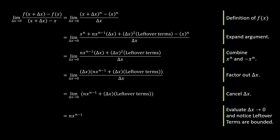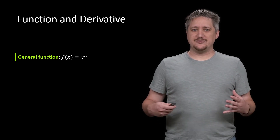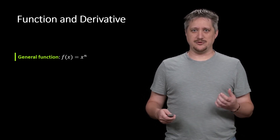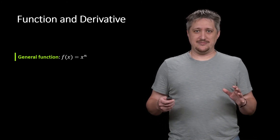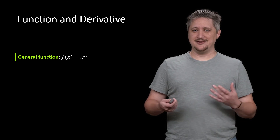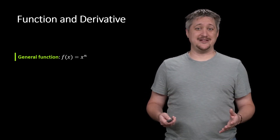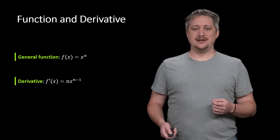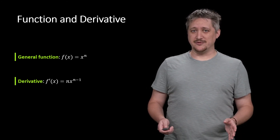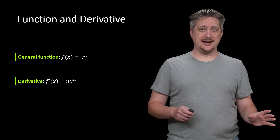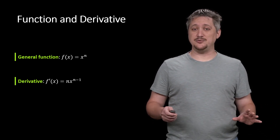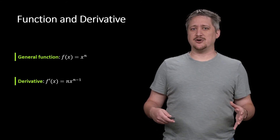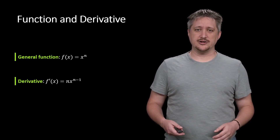So what does this tell us? Through a lot of effort, we've determined that if you have a monomial x to the n, its derivative is simply n times x to the n minus one. We can immediately state the derivative without running through all that difference quotient machinery. This is sometimes called the power rule, or the polynomial rule.